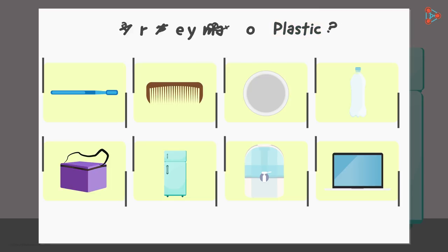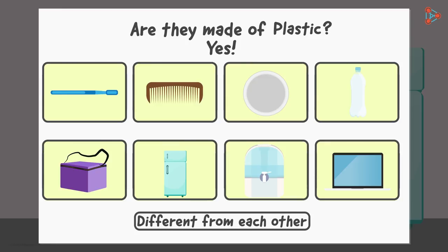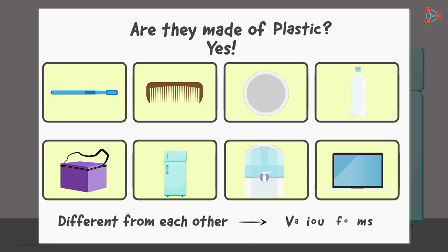So are all these articles made up of plastic? Yes, but they are quite different from each other. So how is that possible? Well, it is possible because plastic itself comes in various forms.